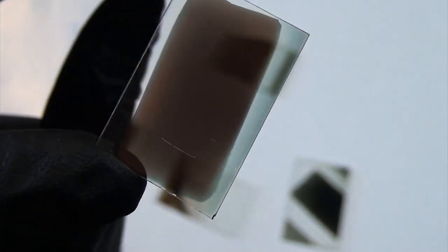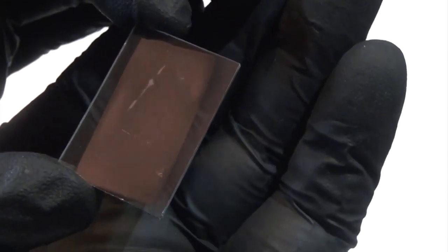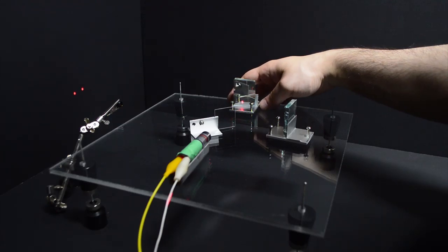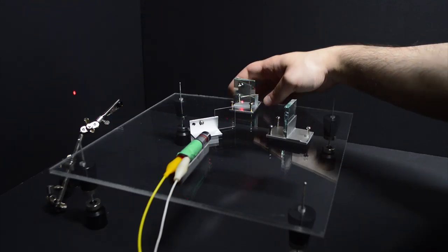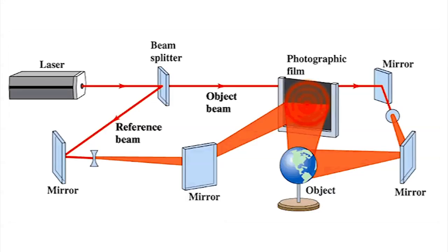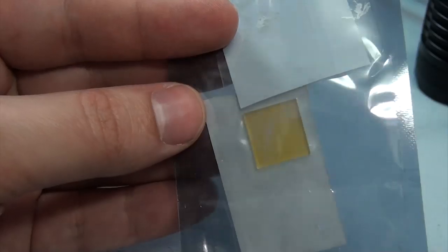Depending on how long you let the deposition go for, you can get different thicknesses of copper and also different amounts of mirror. If you only let it sputter for a short time you can very easily make what's called a half silver mirror, which is what we used a few weeks ago to make this little interferometer setup. The half mirror lets some light through while reflecting some, which is used to split a single laser beam into two beams. This is also used in things like holography and many other optical setups.